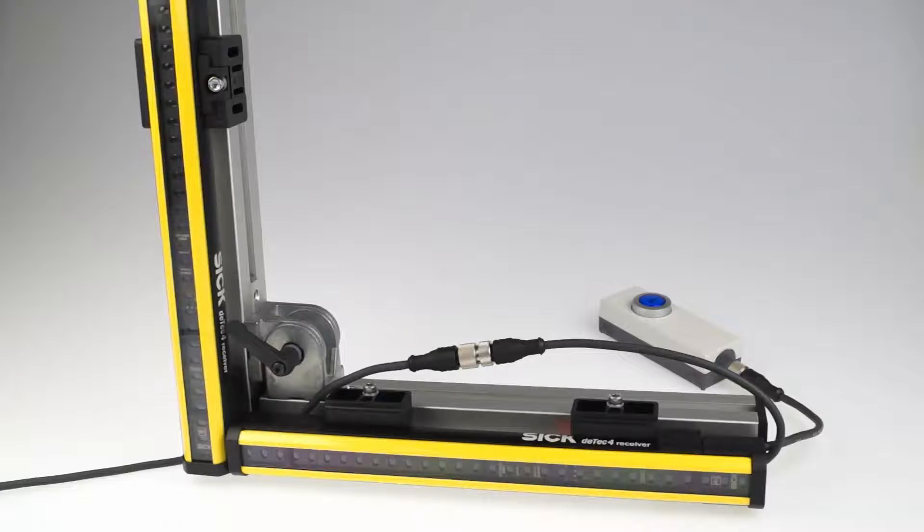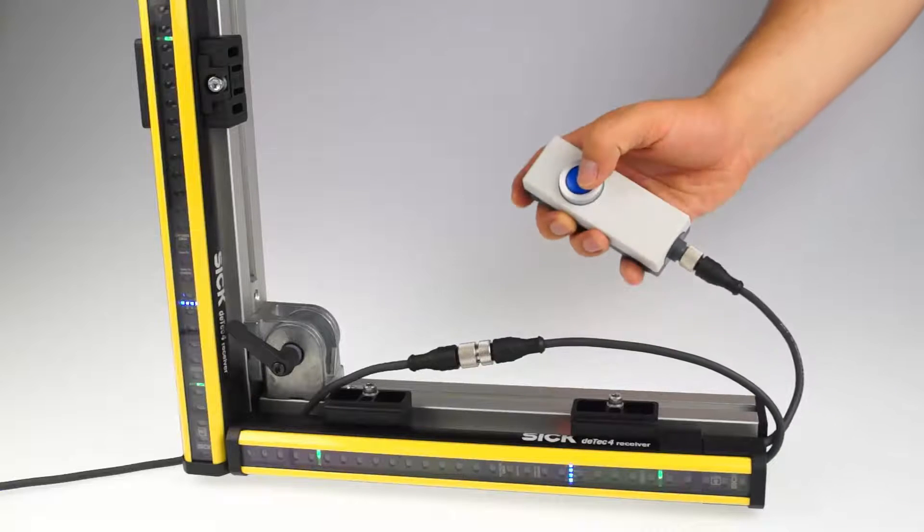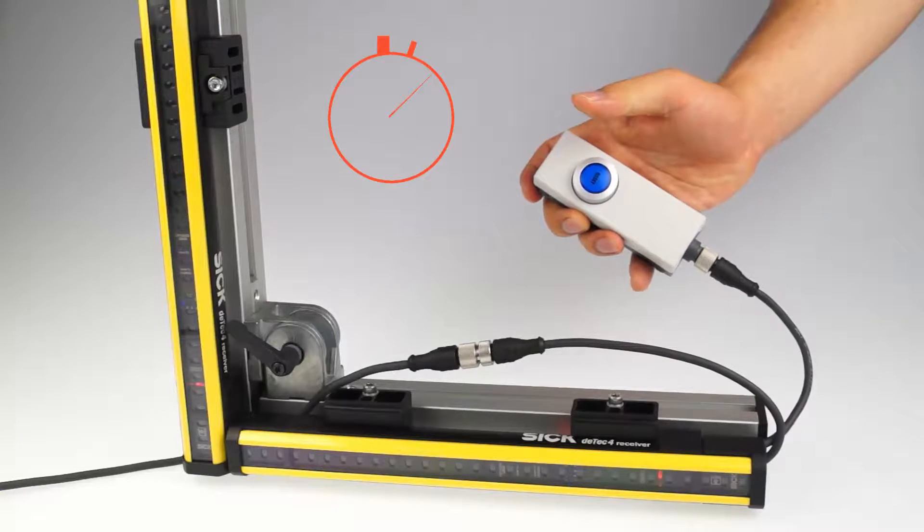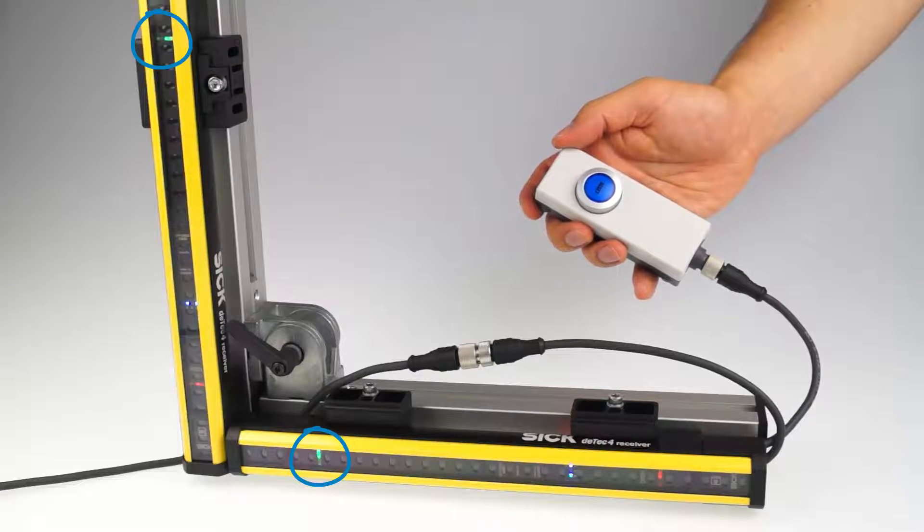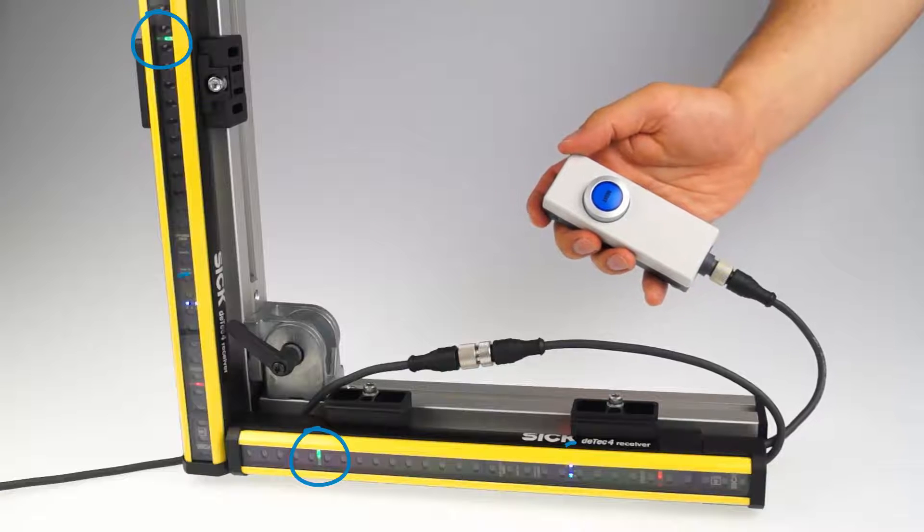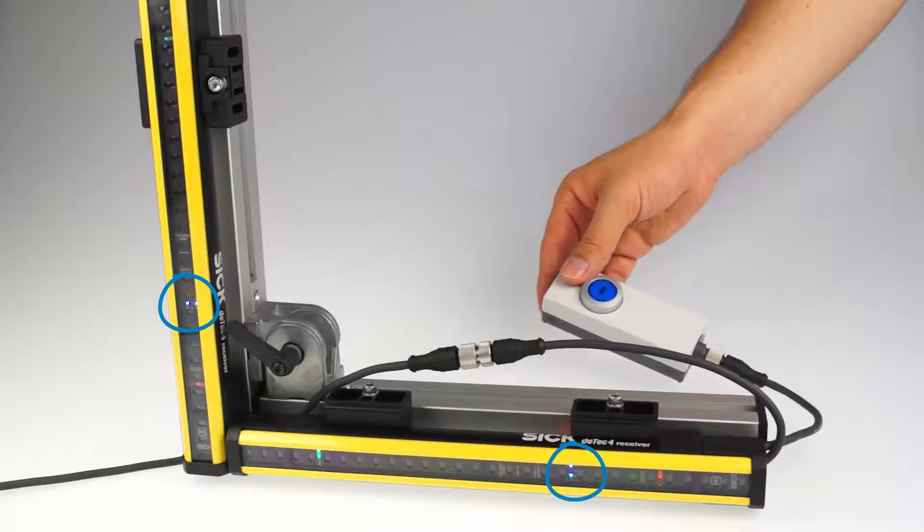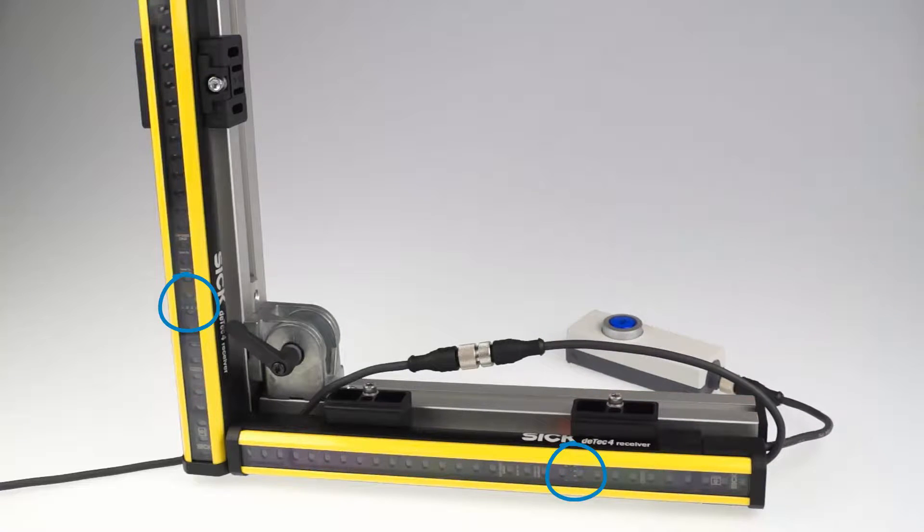Then connect the system again with the power supply. And within 30 seconds you have to press the reset button and release it after 1 to 3 seconds. To signal that the configuration has been successful, the device's field LEDs flash green. The blue alignment LED 4 also flashes to signal that the restart interlock is configured now.